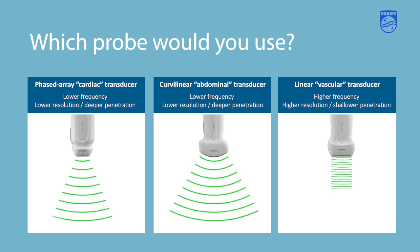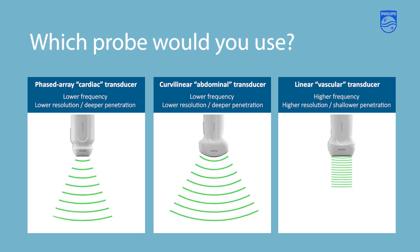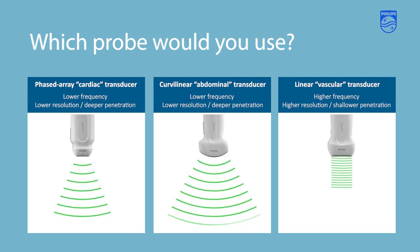The linear probe offers less penetration but gives you very crisp images of structures on top of each other. The curvilinear abdominal transducer is the lowest frequency, gives you the most penetration, and is often used for evaluation of organs such as the liver and kidneys. You can use any of these probes to do lung ultrasound examinations, though certain probes may give you better image quality depending on the pathology being evaluated.